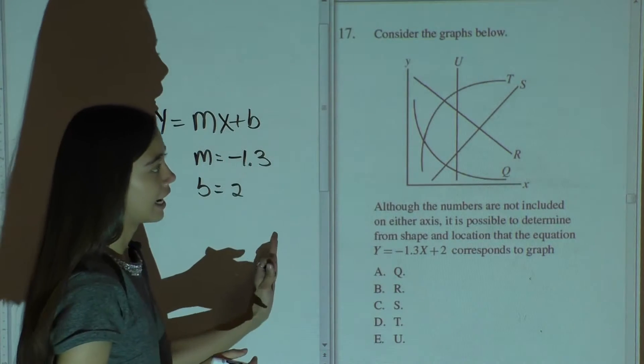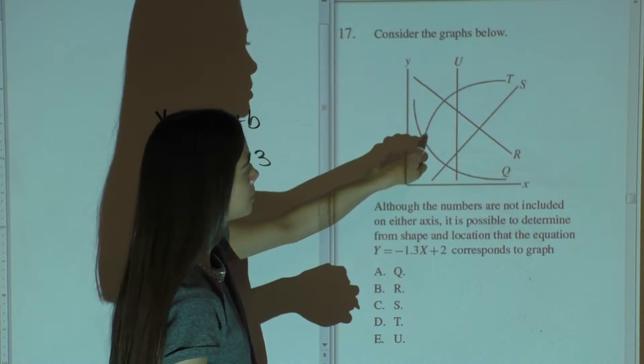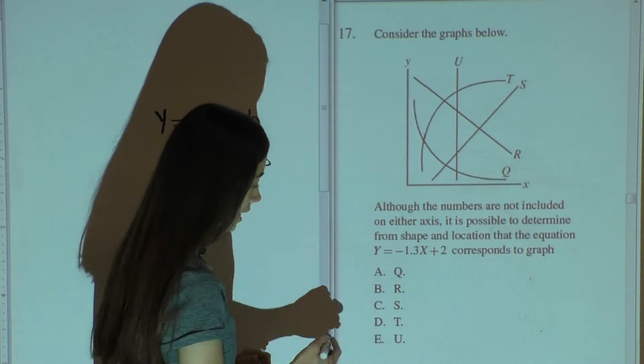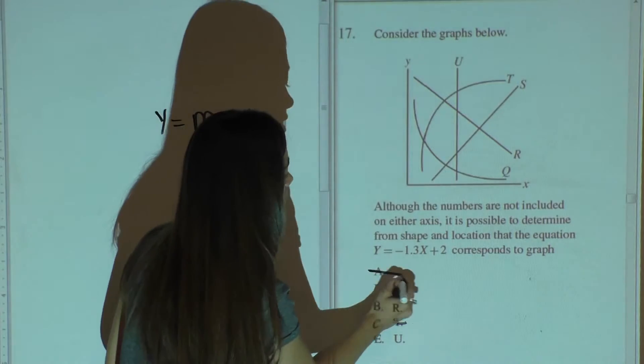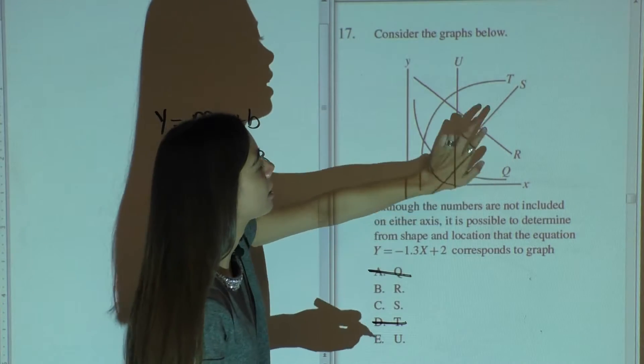So that tells you that this is a line, so immediately you can eliminate option t because that is not a straight line, and you can eliminate q because that's not straight. That leaves you with r, s, and u.